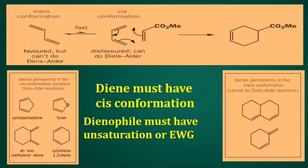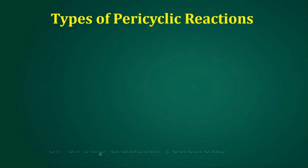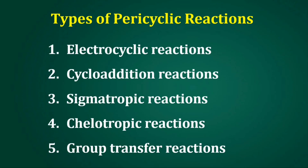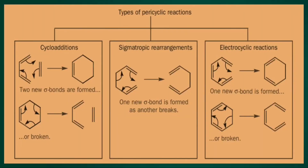This is one type of pericyclic reaction. The total types of pericyclic reactions are: first, electrocyclic reactions; second, cycloaddition reactions; third, sigmatropic reactions; fourth, cheletropic reactions; and fifth, group transfer reactions. Through diagrams we can easily understand the differences between cycloaddition, sigmatropic, and electrocyclic reactions. The Diels-Alder reaction is a cycloaddition pericyclic reaction. In the next video, step by step, we will study cycloaddition reactions, sigmatropic reactions, and electrocyclic reactions.